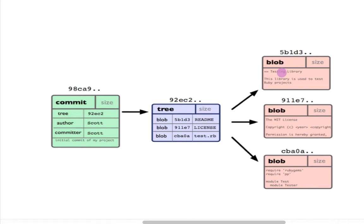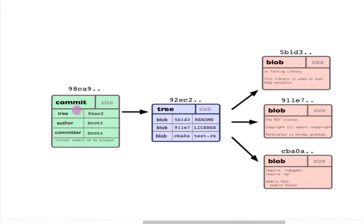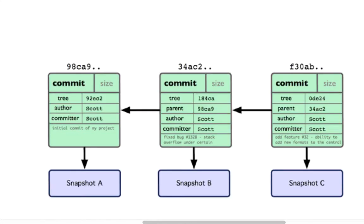Hello everyone. In this chapter we are going to talk about branches. As we talked about in the previous chapter, a Git repository is made of basically four objects: blob, tree, commit, and tags. Whenever we create any file or do any changes, a blob is created. On the directory level we have the tree, and commit is an object which keeps the information of files as well as the tree and some other metadata.